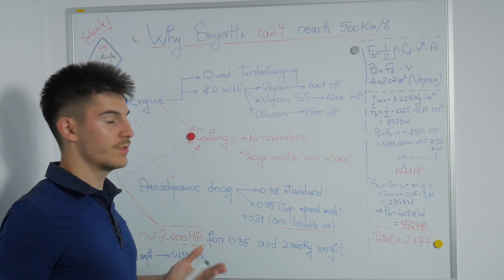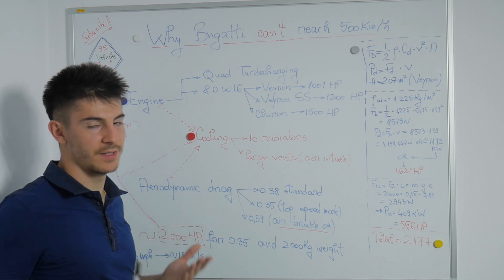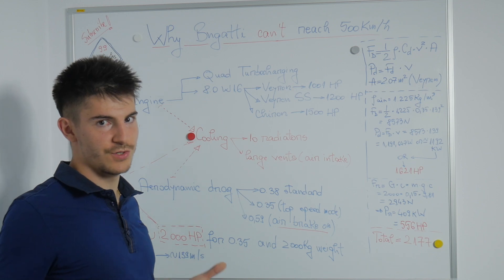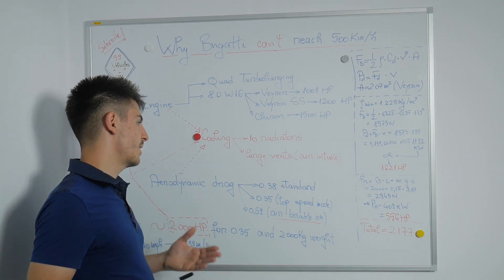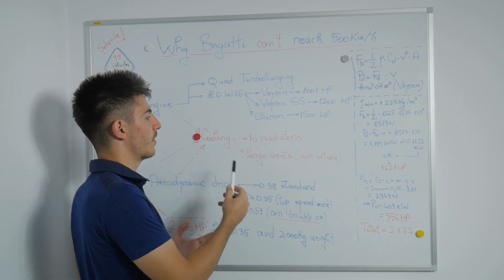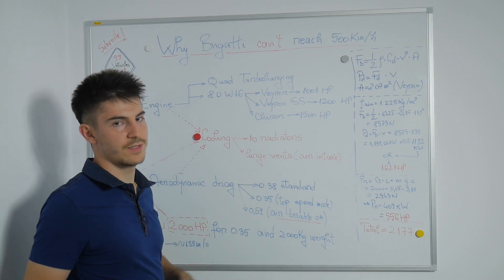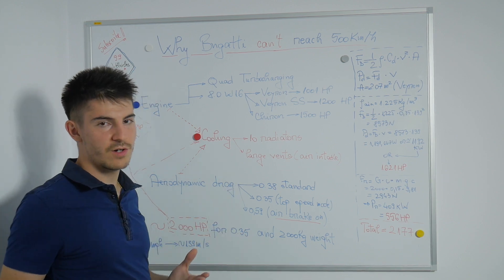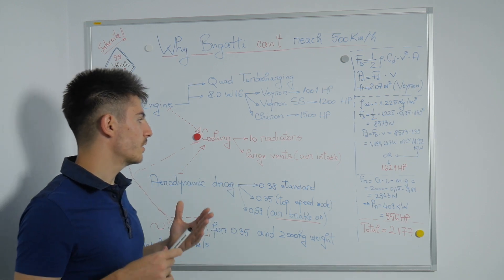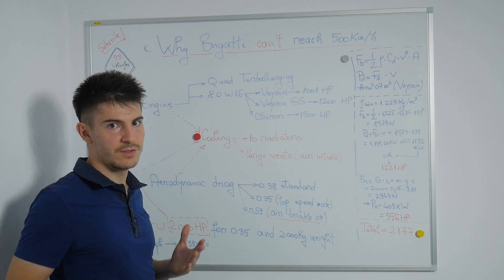To create a large cooling system means that you need tons of radiators and large vents for the air intake. If you create large vents in the front of the car, you will increase the aerodynamic drag coefficient.